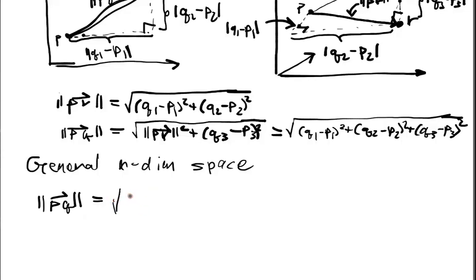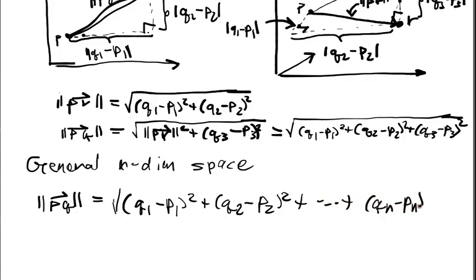Q1 minus P1 square plus Q2 minus P2 square dot, dot, dot, up to Qn minus Pn square. And just the square root of that entire sum. Very nice. So now we can talk about length and distance in our Euclidean spaces, our general n-dimensional Euclidean spaces.